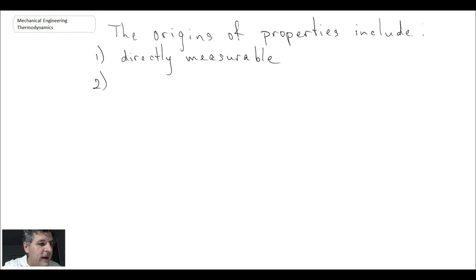The second place where we can get properties is they can be defined by the laws of thermodynamics. An example of that is entropy, which we will look at later on in this course.